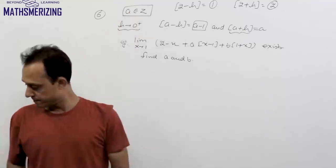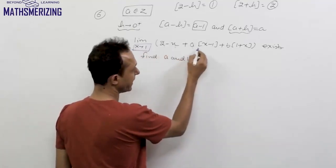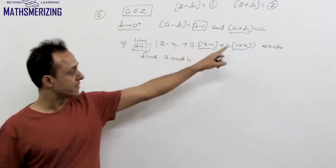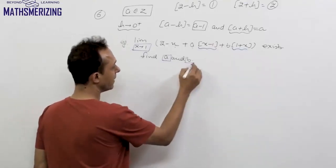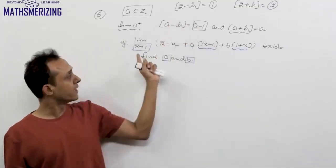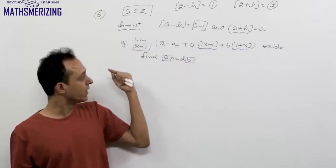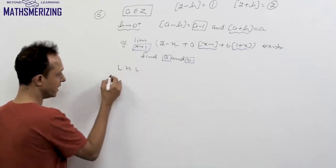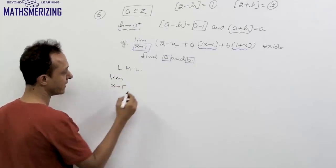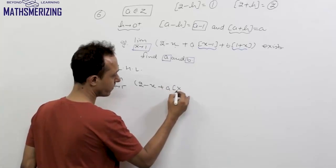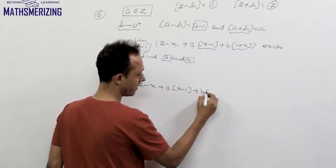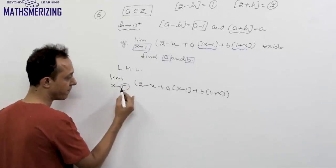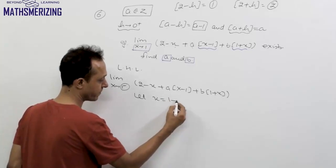Consider the question: limit x tends to 1 of [2 minus x + a·GIF(x minus 1) + b·GIF(1 plus x)]. If this limit exists, find a and b. Since GIF is discontinuous at integer points, we must take both left-hand and right-hand limits. For the left-hand limit, substitute x = 1 minus h.